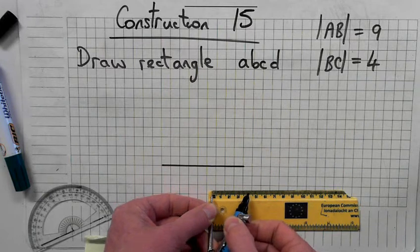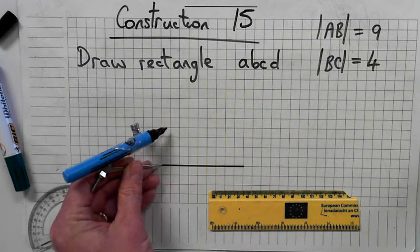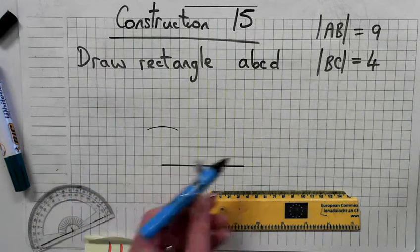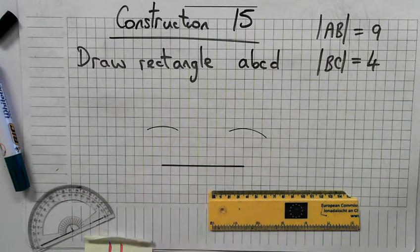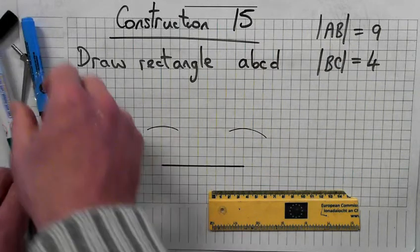Measure four units and swing an arc. Get your protractor and mark the center of it.